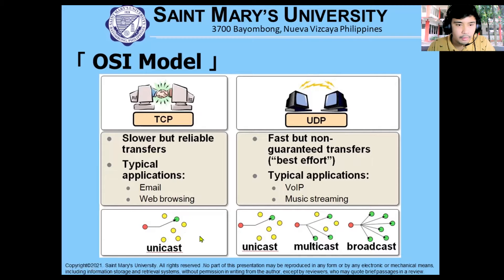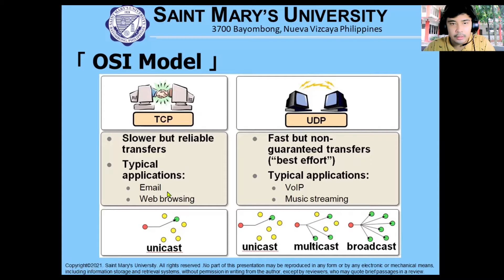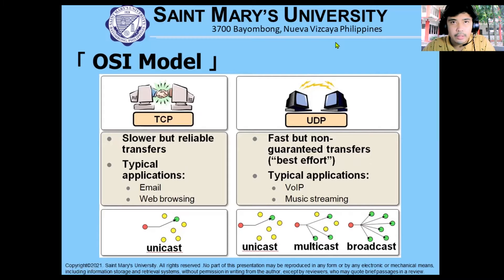Let me talk about the applications under TCP. For example, under TCP communication, we don't want our information sent from our email to contain any errors. So, if you send an email saying 'hello' and the recipient only receives 'help,' basically our message is now unreliable, since what the sender sent is different from what the receiver gets.